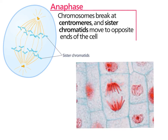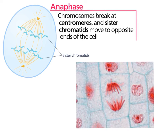There are spindles that are lengthening the cell, some spindles in the middle of the cell that are actually getting longer, and then these spindles connecting to the chromosomes are getting shorter.